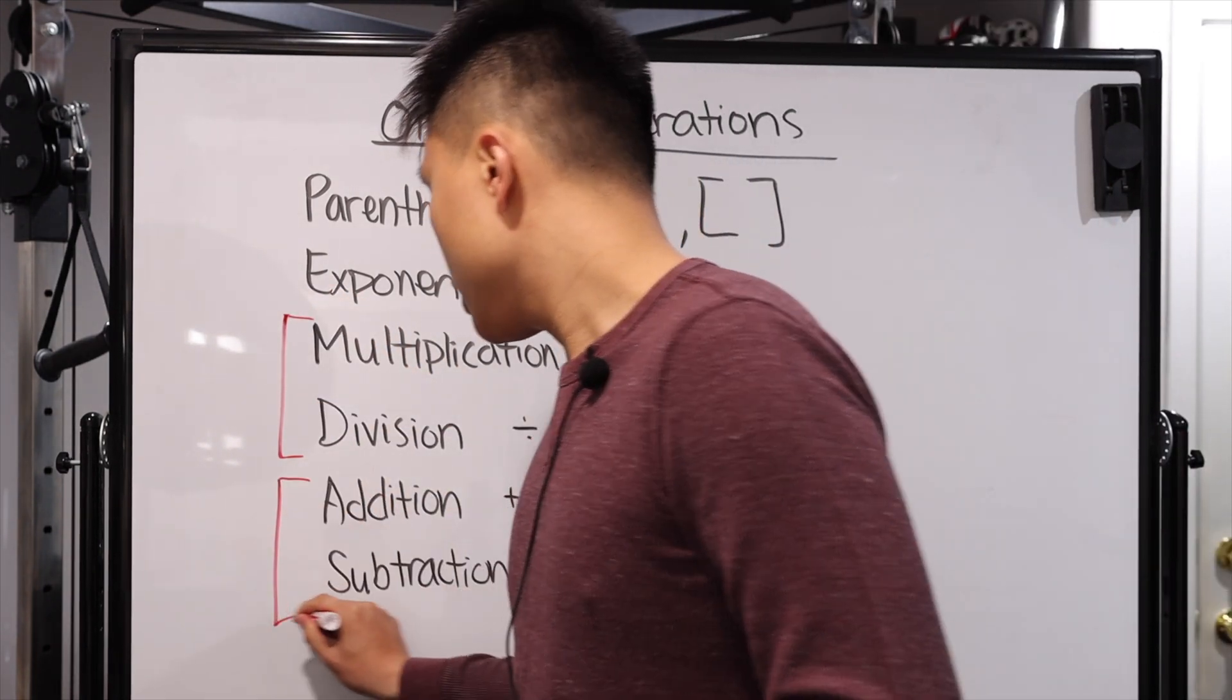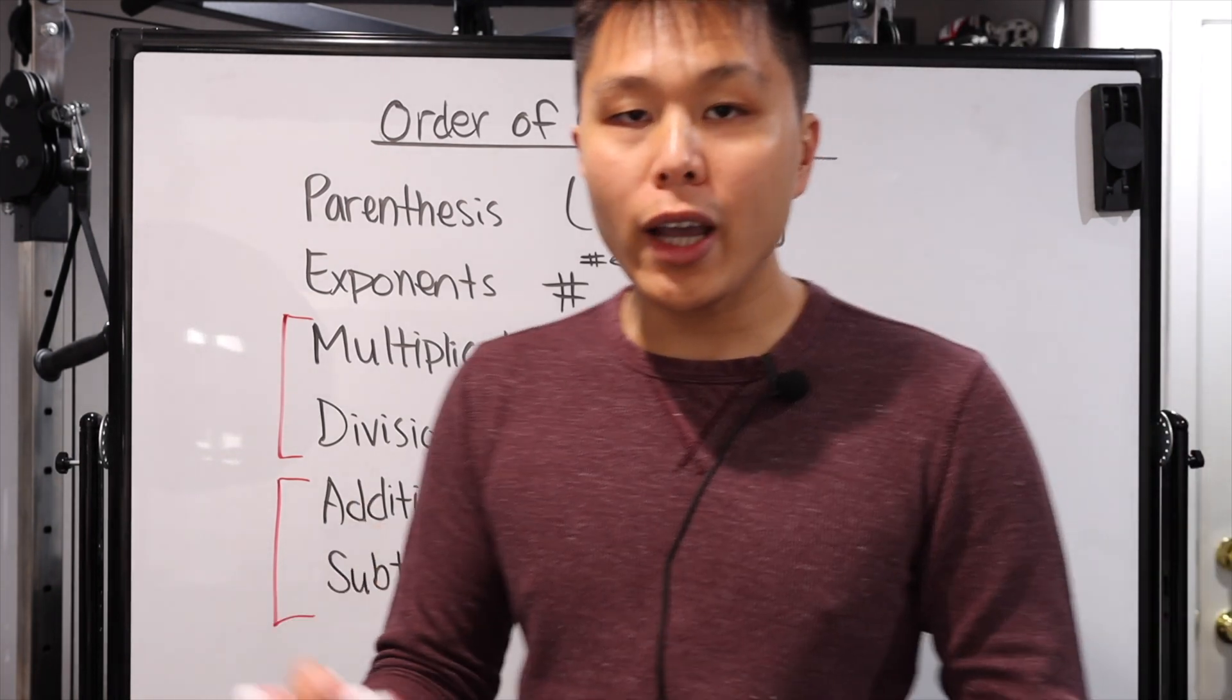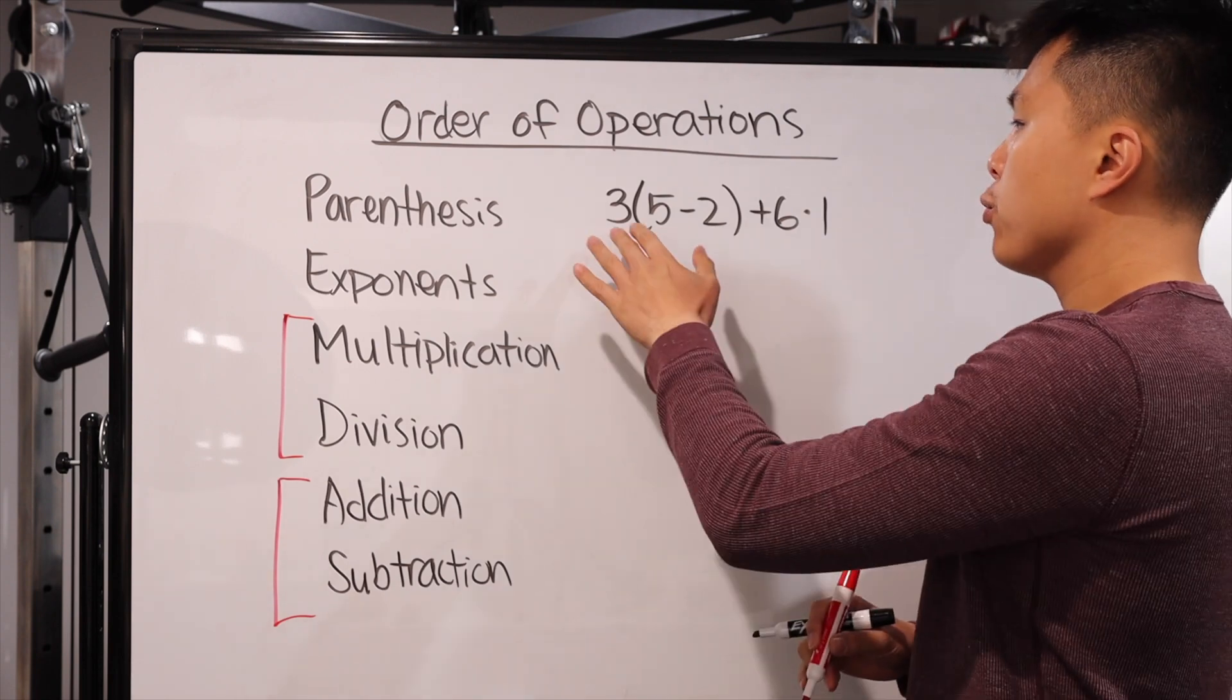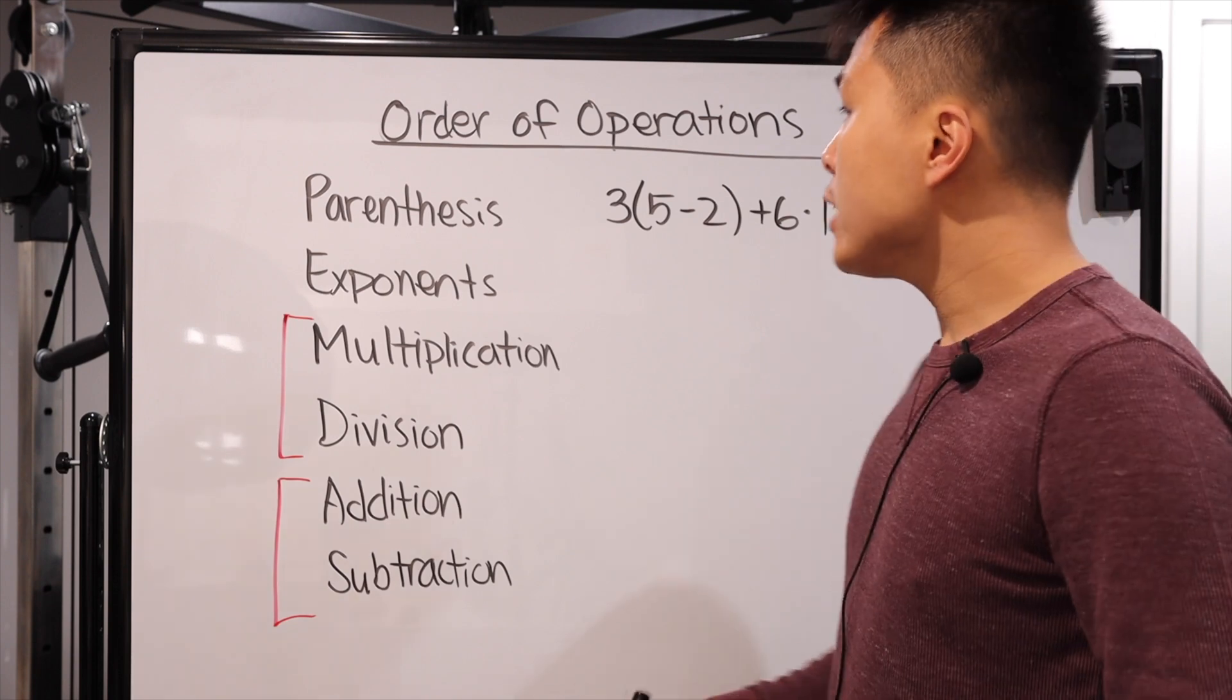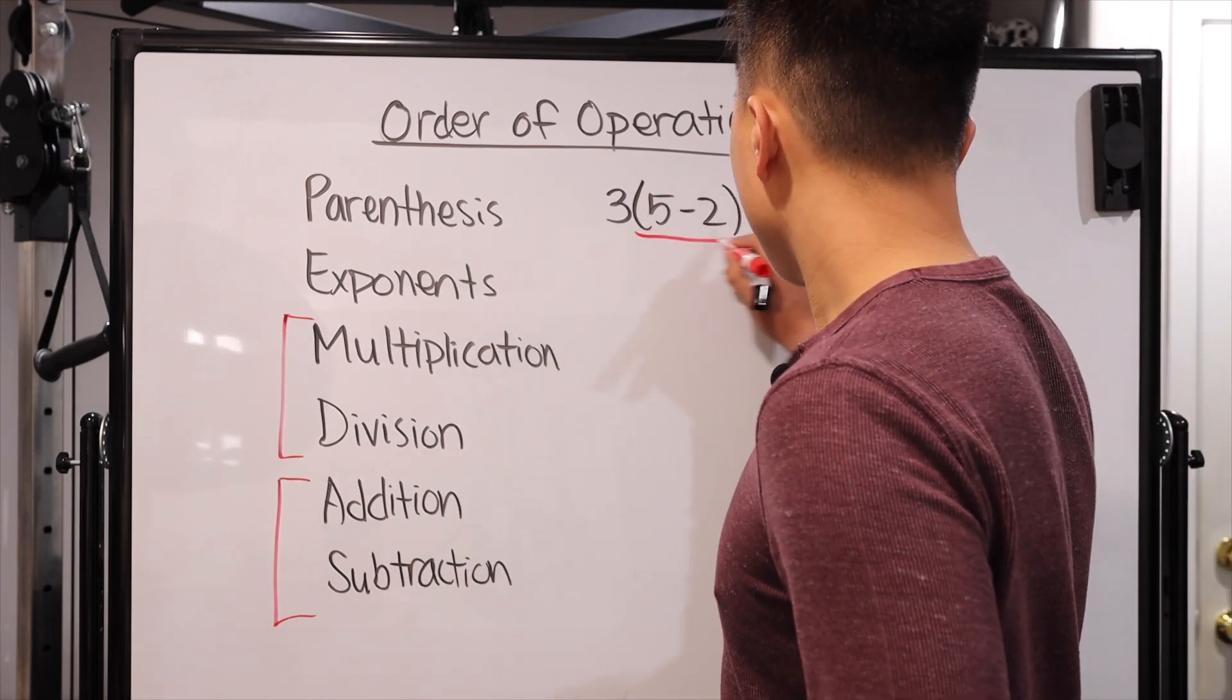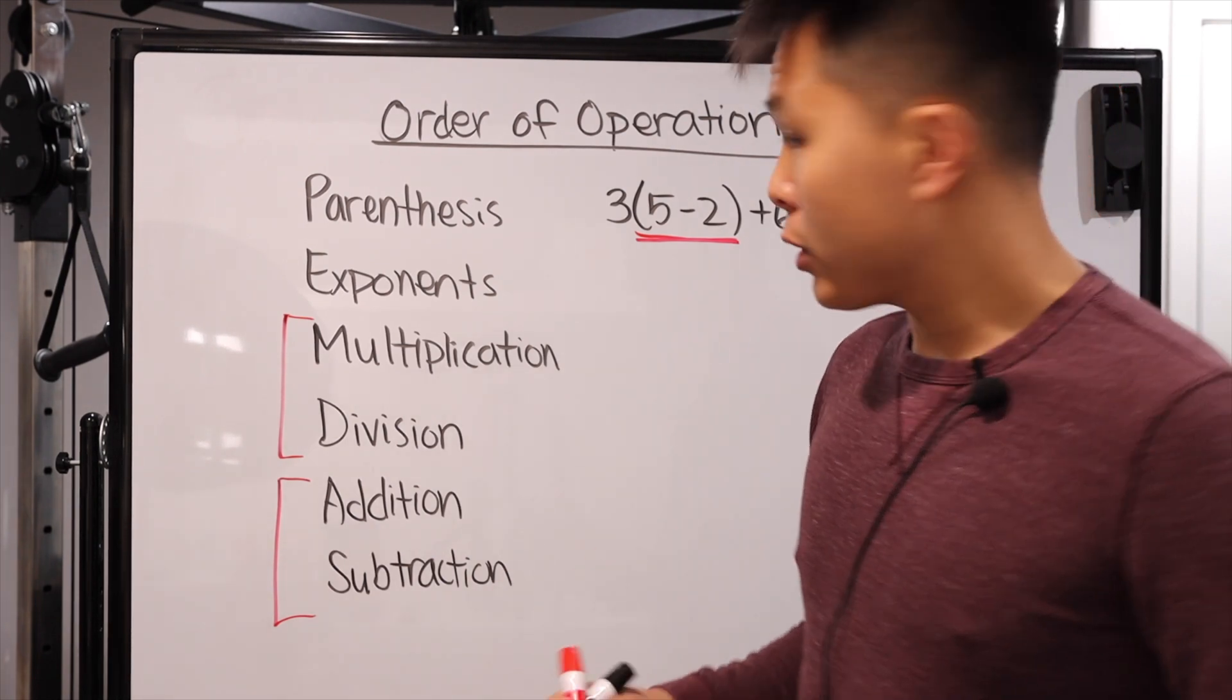Same with addition and subtraction. So there is the order of operation. Let's look at it in an example. All right, so let's look at this first example. We have 3 times the quantity of 5 minus 2 plus 6 times 1. Based on the order of operation, first and foremost, we're going to look at the parentheses.